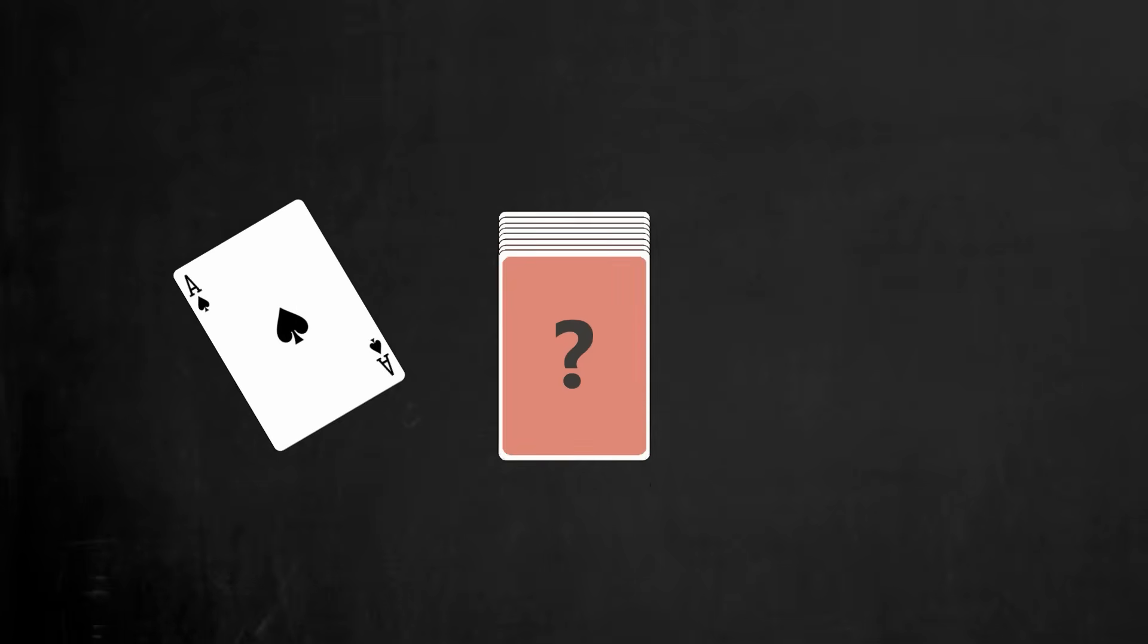Let's revisit our deck of cards example. What is the probability of drawing the Ace of Spades? If you are familiar with standard playing cards, you would most likely say 1 in 52, based on your knowledge of what cards a typical deck has.